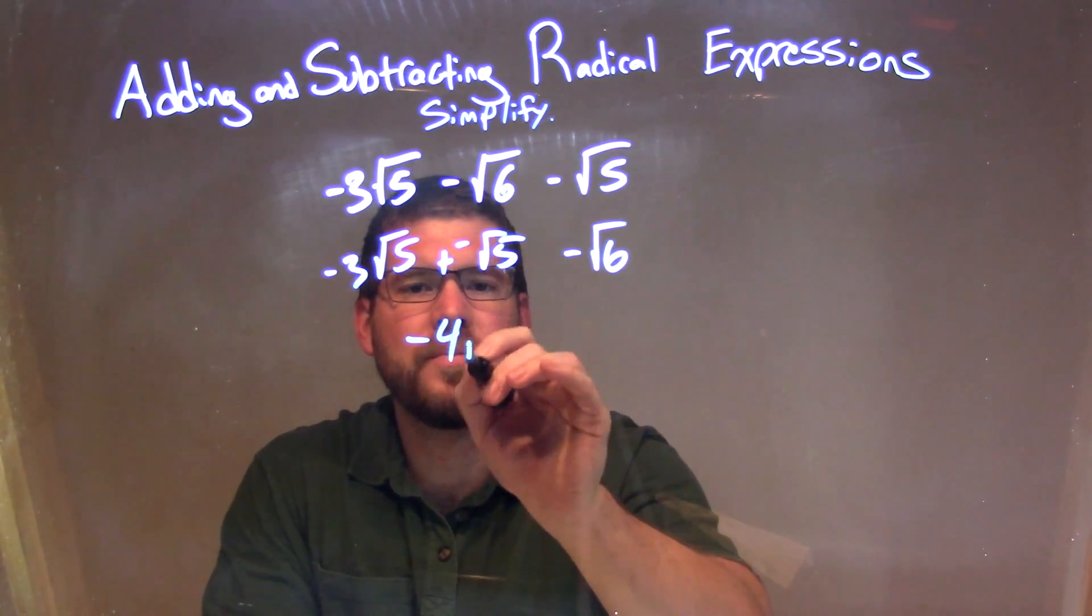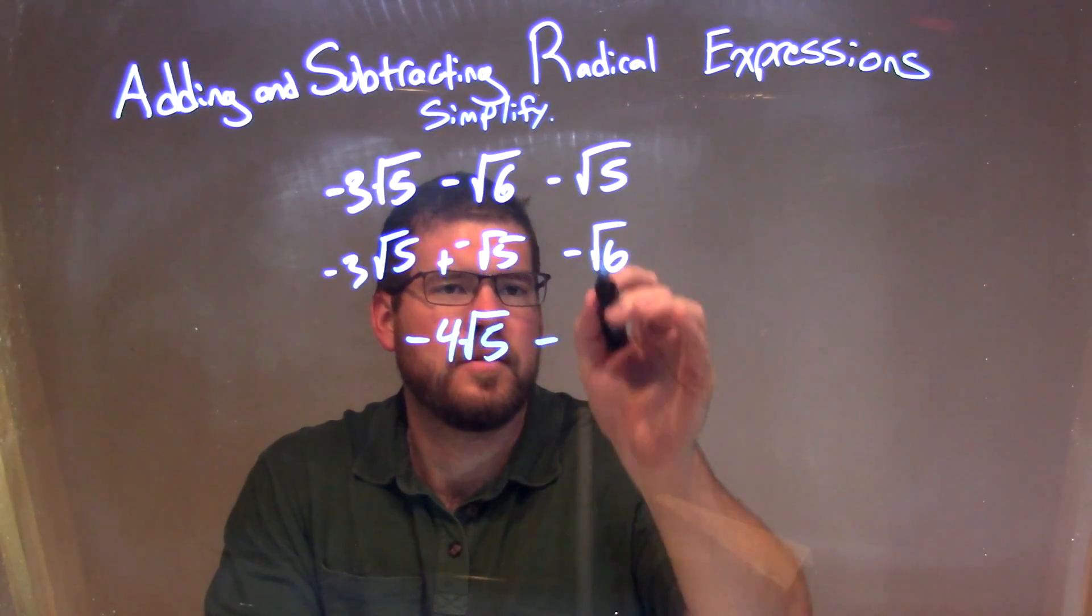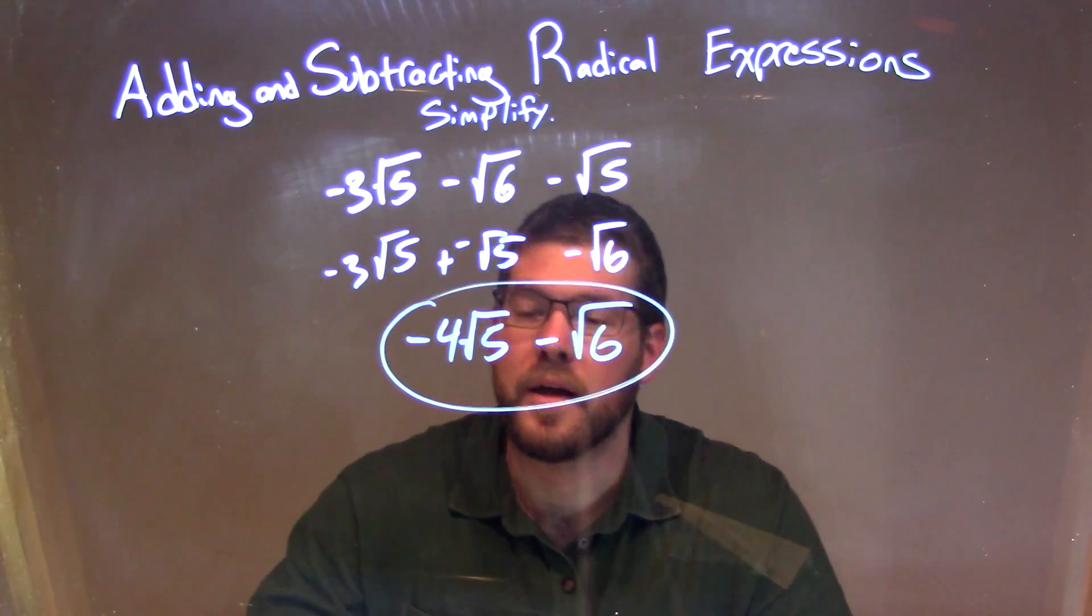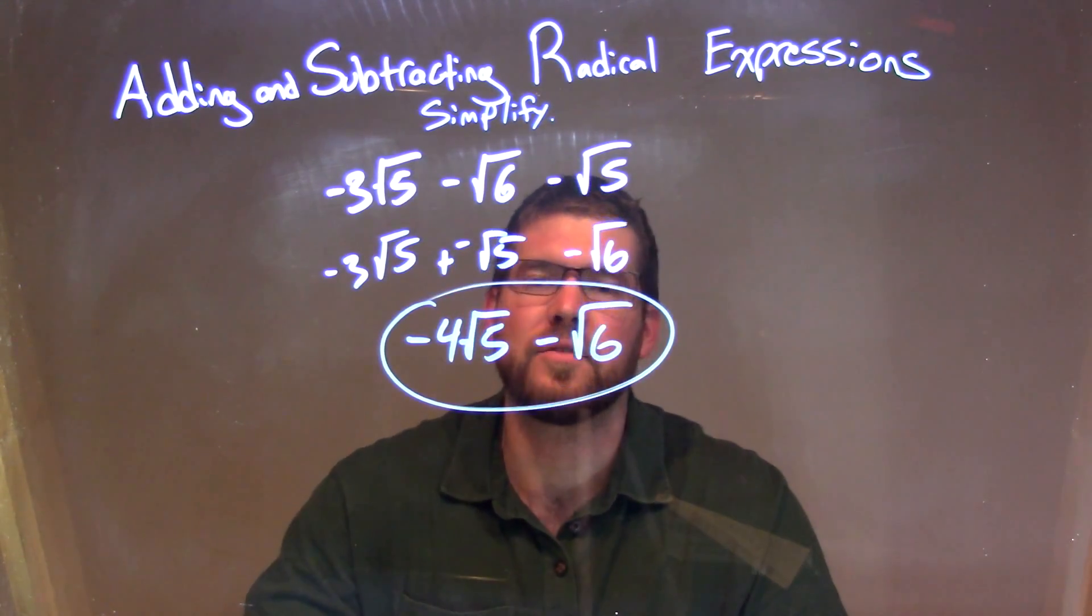So we have negative 4 square root of 5 minus, bring down the square root of 6, and there we go. The final answer here: negative 4 square root of 5 minus the square root of 6.